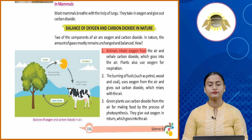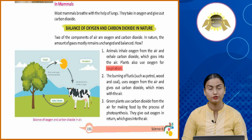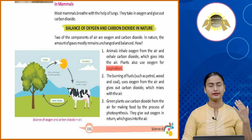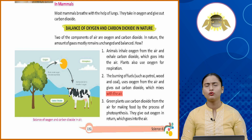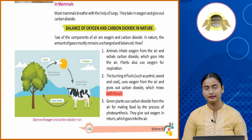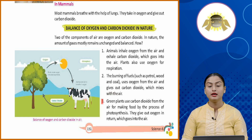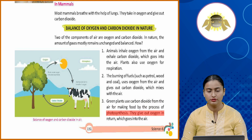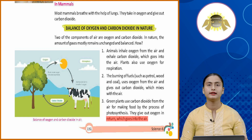Number 1: animals inhale oxygen and exhale carbon dioxide; plants also use oxygen for respiration. Number 2: burning of fuels such as petrol, wood, and coal uses oxygen and gives out carbon dioxide. Number 3: green plants use carbon dioxide for photosynthesis and give out oxygen in return. In photosynthesis, green plants release oxygen and take in carbon dioxide, maintaining the balance in air.